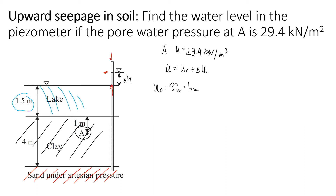Point A is located here, and we have this much water above it. The hydrostatic head above point A includes 1.5 meters of lake water plus an additional 1 meter of groundwater in the clay, giving us unit weight of water times 2.5 meters.